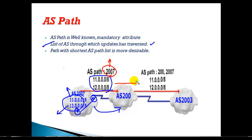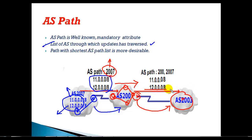The update is passed to all routers inside AS 200, and then the border router passes this information to AS 2003. When advertising, the border router appends the AS path information showing these networks are coming from AS 2007 and then AS 200, building the AS path list as the update traverses each autonomous system.